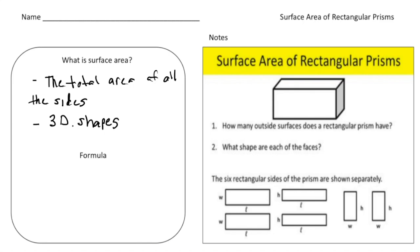Again, surface area is the total area of all the sides, and normally we deal with surface area with 3D shapes. Take a look at this diagram of a rectangular prism. The first question is: how many outside surfaces does a rectangular prism have? Looking at the image, you can see a front side, a right-hand side, and a top side. But even though you see three sides, there are actually six sides to a rectangular prism — because there's a front and a back, a top and a bottom, and a right and a left. Altogether, there are six sides in total.